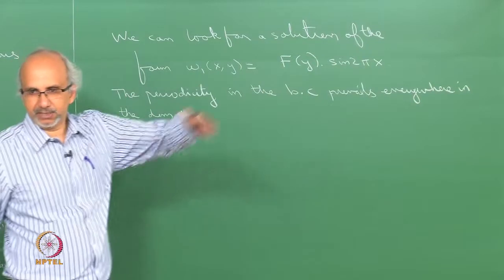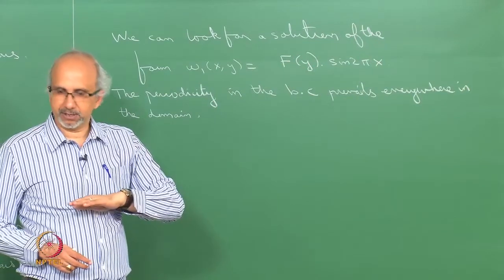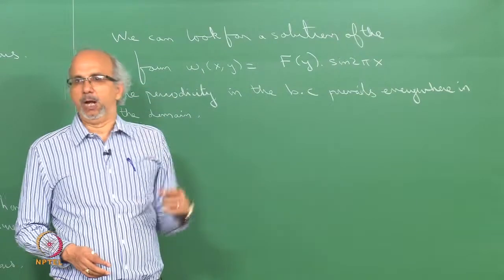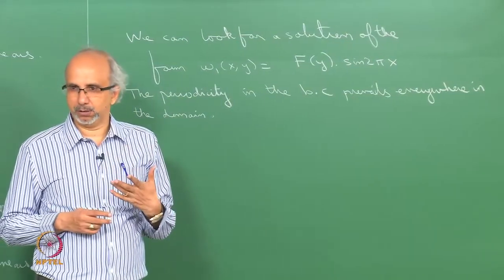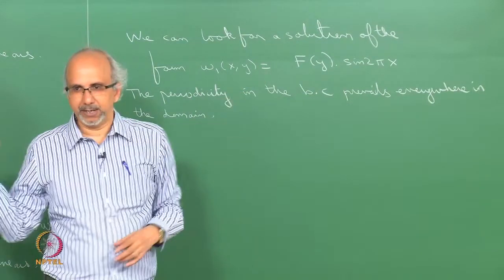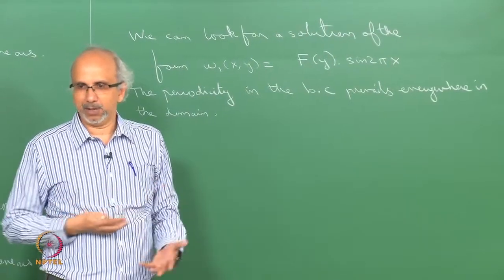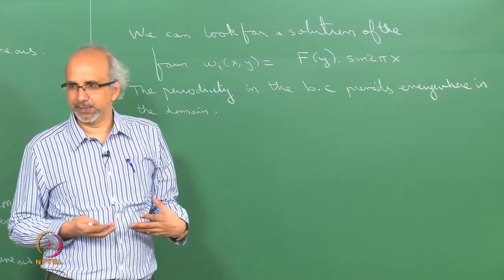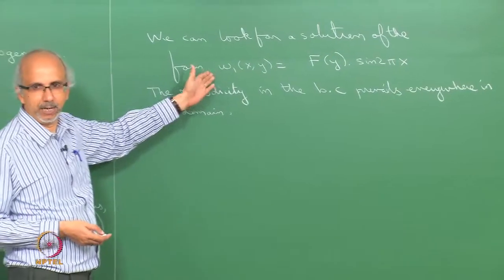In the fully developed flow, one thing is changing in the z direction. Whether such a solution is possible or not can be found by substituting this form and seeing if we can get an f(y). If I am not able to proceed further, that means the assumption is wrong and I would have to come back and do something else. You make an assumption, proceed further, get stuck, come back, and make a change.